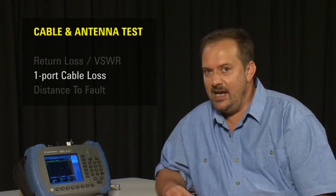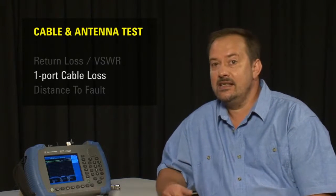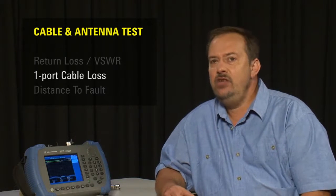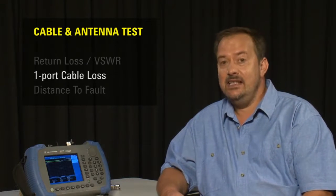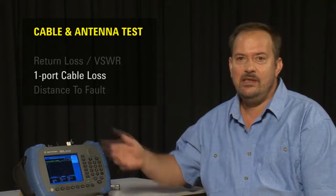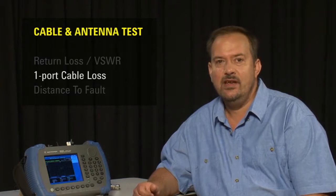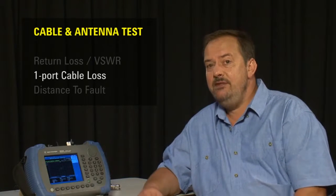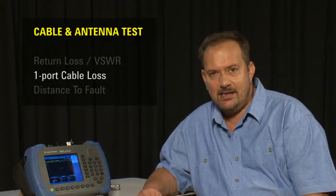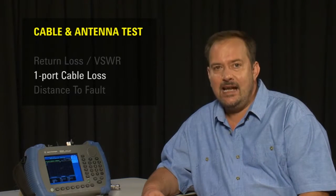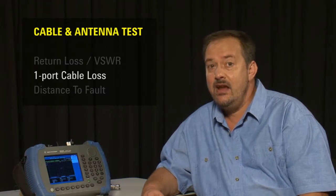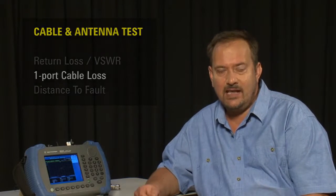If you can access both ends of a cable, for example when it is still on its cable reel when new, then you do not need to use this feature, as the HSA's tracking generator can be used to make a standard two port measurement of insertion loss. But if your cable is already installed on a mast, then this feature is extremely useful, as it allows us to measure the cable's attenuation from just one end of the cable.